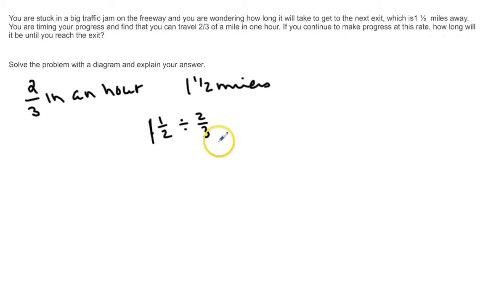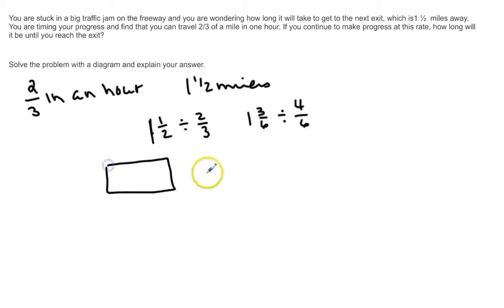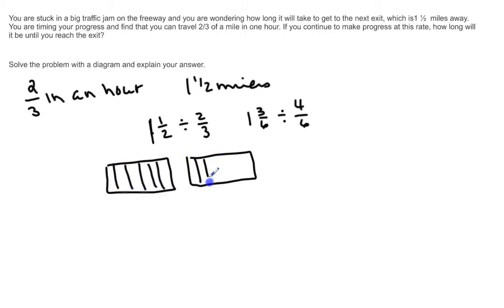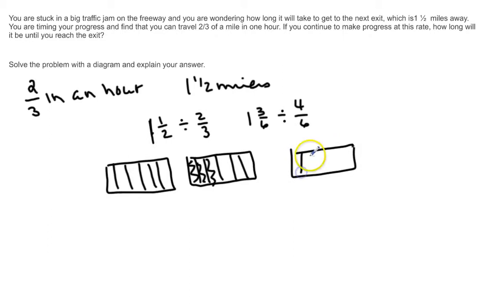Since the problem is asking how long it will take, we want to find how many two-thirds-mile segments are in one and a half miles — so we're finding one and a half divided by two thirds. I don't have common denominators and I need to visually represent it, so I'm going to change this to one and three sixths divided by four sixths, because both two and three go into six. I'll represent one, then another one, and separate into six.